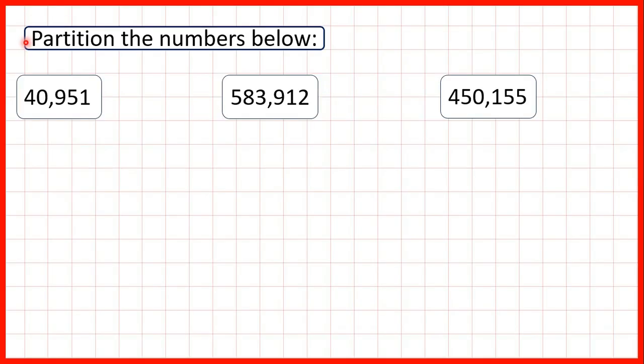We need to partition the numbers below. When we partition numbers, what we're doing is showing the value of each digit.